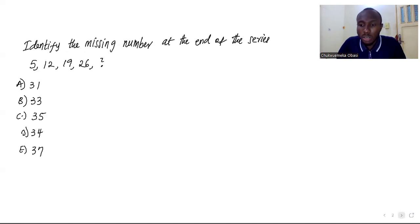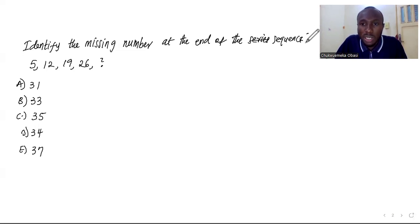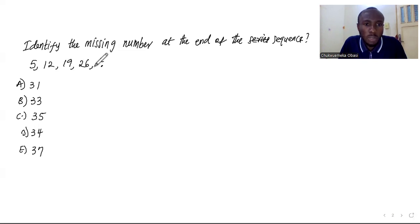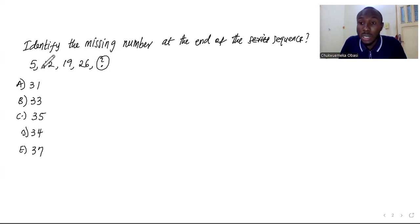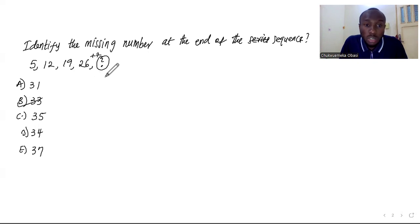Alright, here we go — question one. It says identify the missing number at the end of the series. Actually, this is a sequence, not a series. A series is a sum of a sequence, and here each item is separated by a comma. So we want to get the next number. The numbers are increasing: from 5 to 12 is an increase of 7, from 12 to 19 is plus 7, from 19 to 26 is plus 7. It's a linear increase of 7, so the next number is 26 plus 7, which is 33.